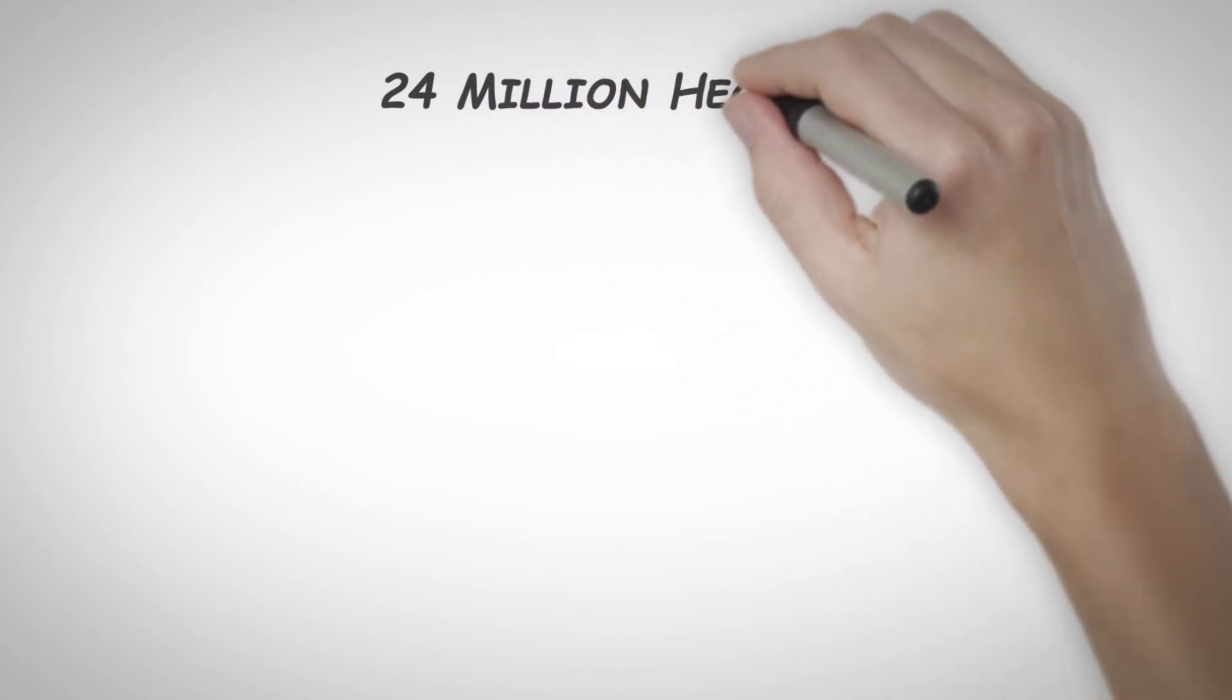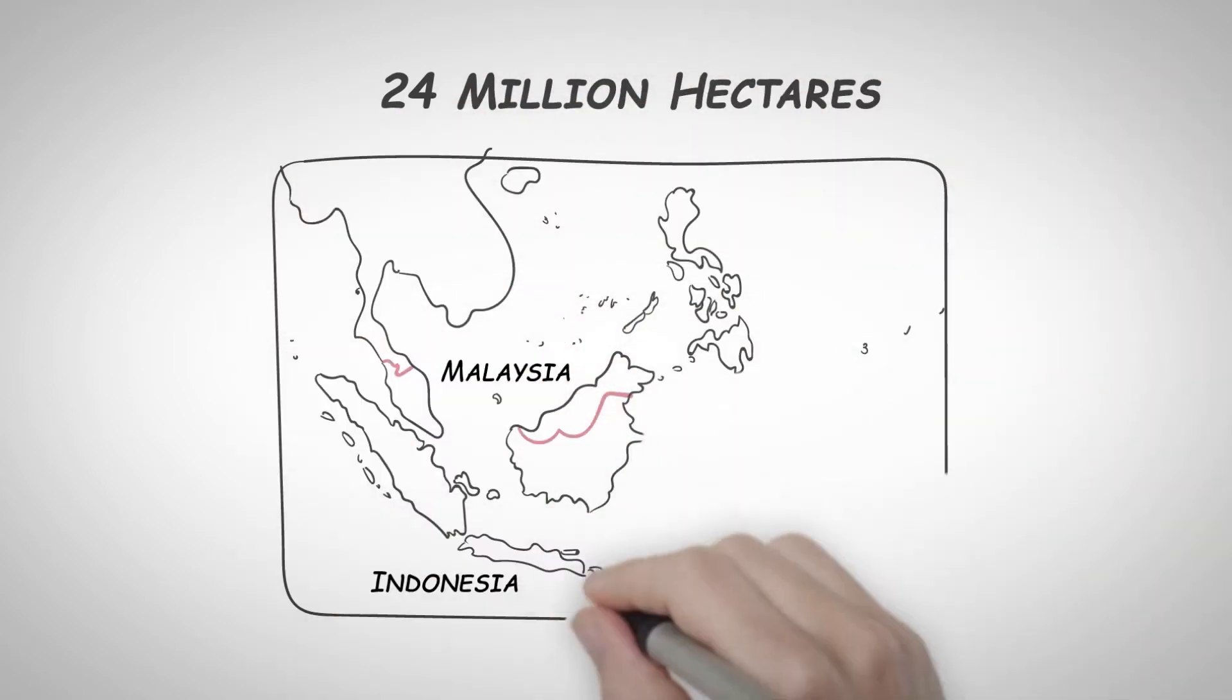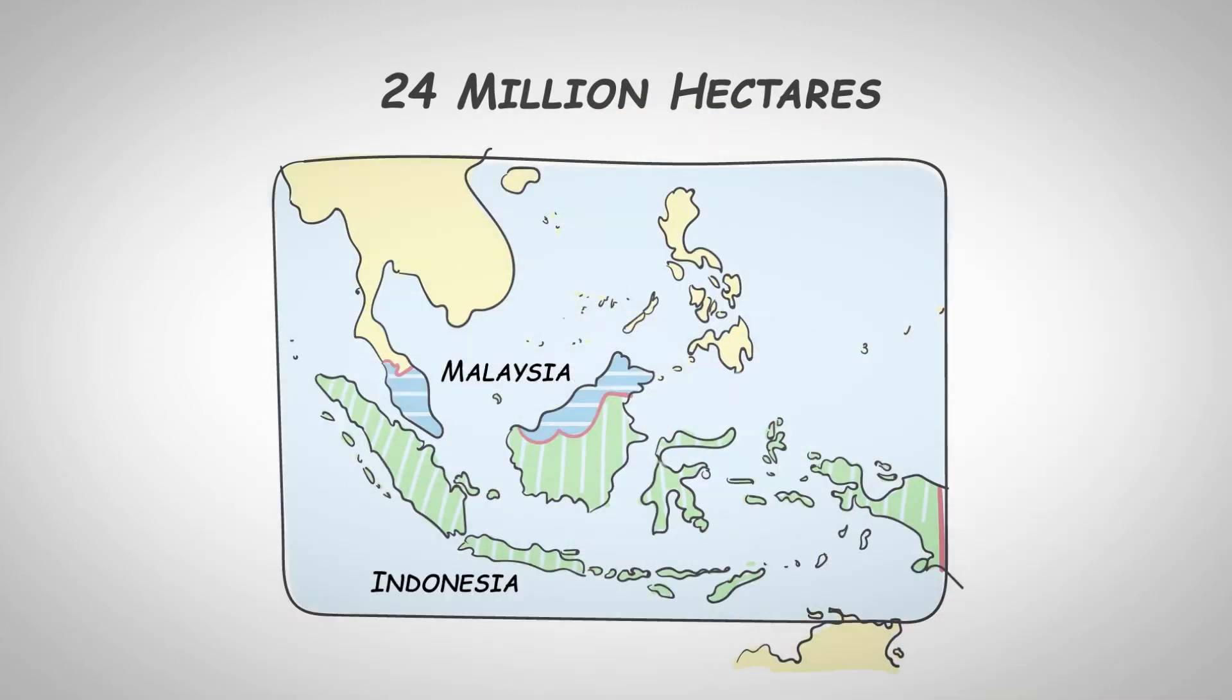Did you know that Malaysia and Indonesia together have more than 24 million hectares of peatlands? Today, it is estimated that over 1 million hectares of these peatlands are under oil palm cultivation in Malaysia and over 2 million hectares in Indonesia.